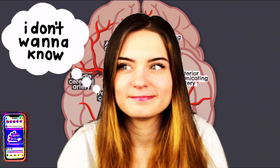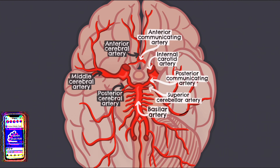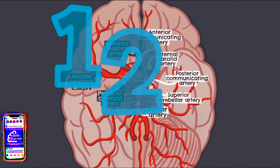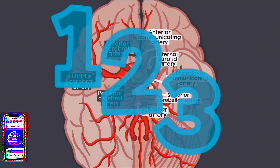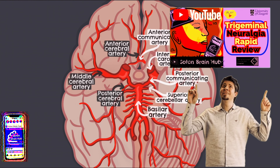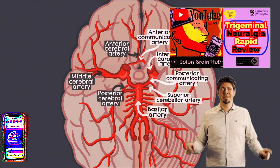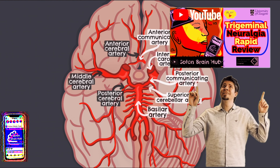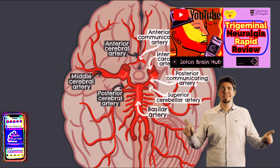At the top of the basilar artery we have the superior cerebellar artery. It supplies blood to the superior part of the cerebellum and is one of three main cerebellar arteries. A condition called trigeminal neuralgia can result from this artery compressing on the trigeminal nerve.